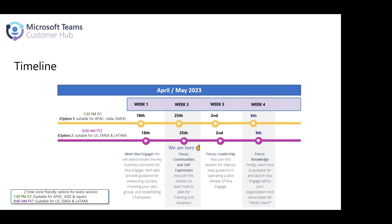All the different app experiences — whether it's mobile, desktop, web, etc. — that's taking a little time over the next few months. So we're going to do some deeper dives into each of the key functional areas. This week we're going to focus on communities and self-expression. Next week we'll focus on leadership, and then week four we'll focus on knowledge. We want to make sure you understand the core capabilities and core business value scenarios, and that you walk away with an understanding of what Viva Engage is and how it can help your organization.